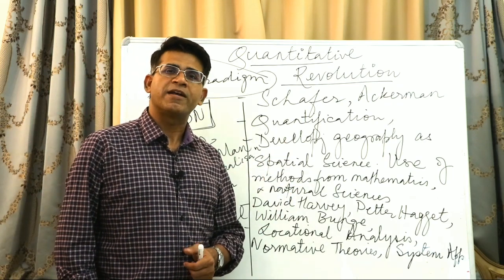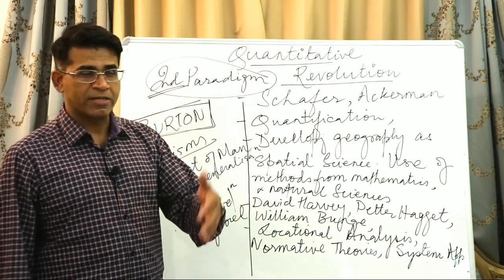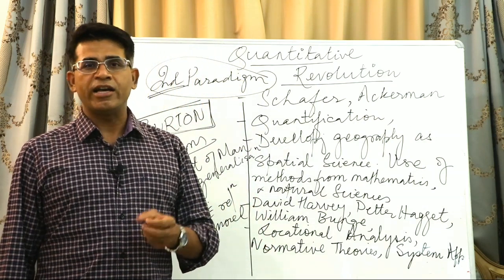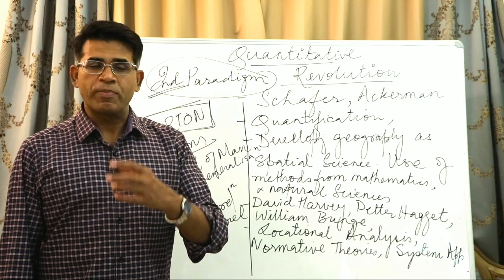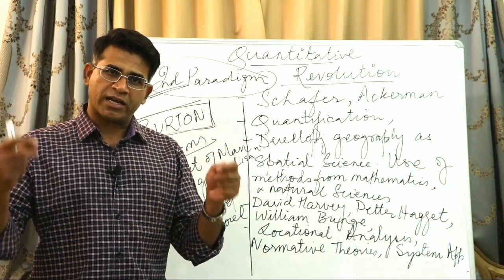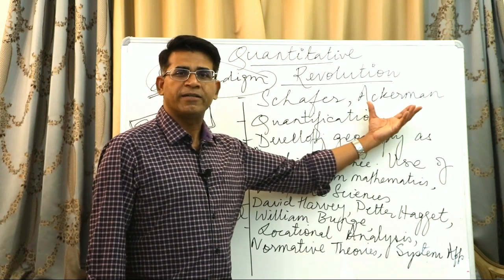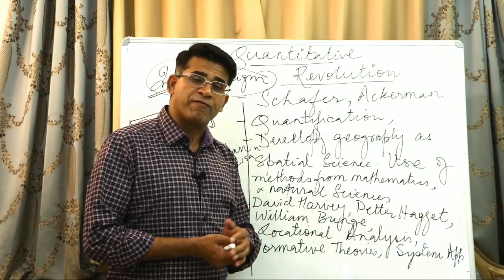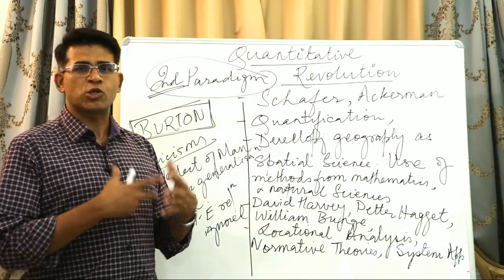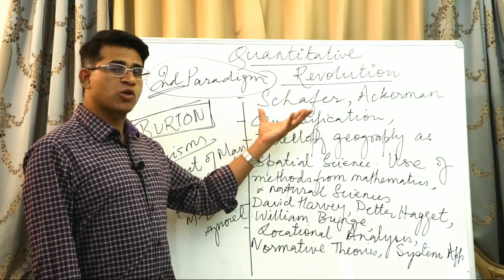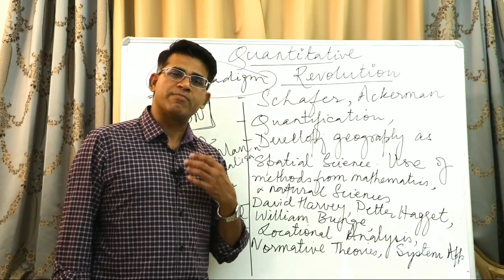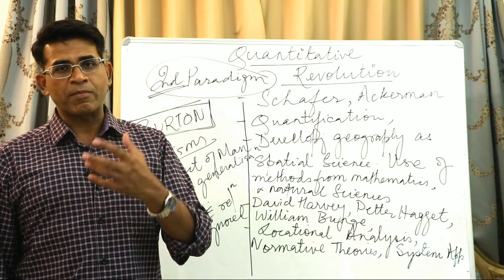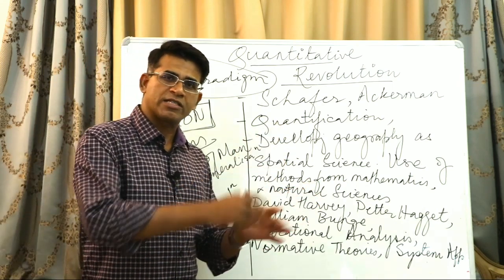He had support of people like Ackerman, who said that geography in the idiographic approach, trying to become an exceptional subject different from others, was getting isolated. Geography was getting big and becoming very different from the sciences. In Schaefer's words, it should be a subject that uses mathematical modeling, statistical methods, generalizations, and develops conclusions which are valid across time and space.